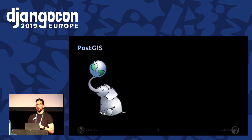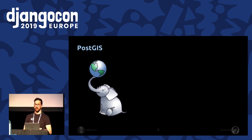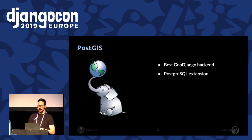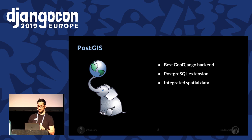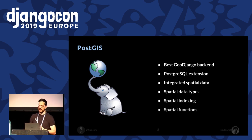As you can imagine, we needed a backend to manage all this geographical data, and our choice was Postgres because we already use Postgres in all our projects. But besides that, Postgres is also the most complete GeoDjango backend. PostGIS is an extension of Postgres, and it integrates spatial data into it. PostGIS adds new spatial data types and specific indexes that speed up the spatial functions you can use in your queries.